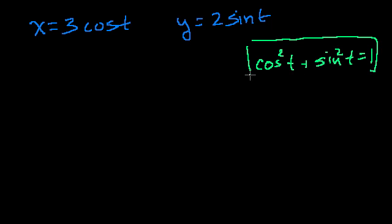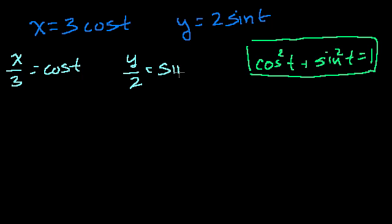The cosine of the angle is the x-coordinate, the sine of the angle is the y-coordinate, and so on. But this is our trigonometric identity. If we can somehow replace the cosine squared with some expression in x, and replace the sine squared with some expression in y, we'd be done. Divide both sides of this equation by 3: x over 3 is equal to cosine of t. Divide both sides of this equation by 2: y over 2 is equal to sine of t.